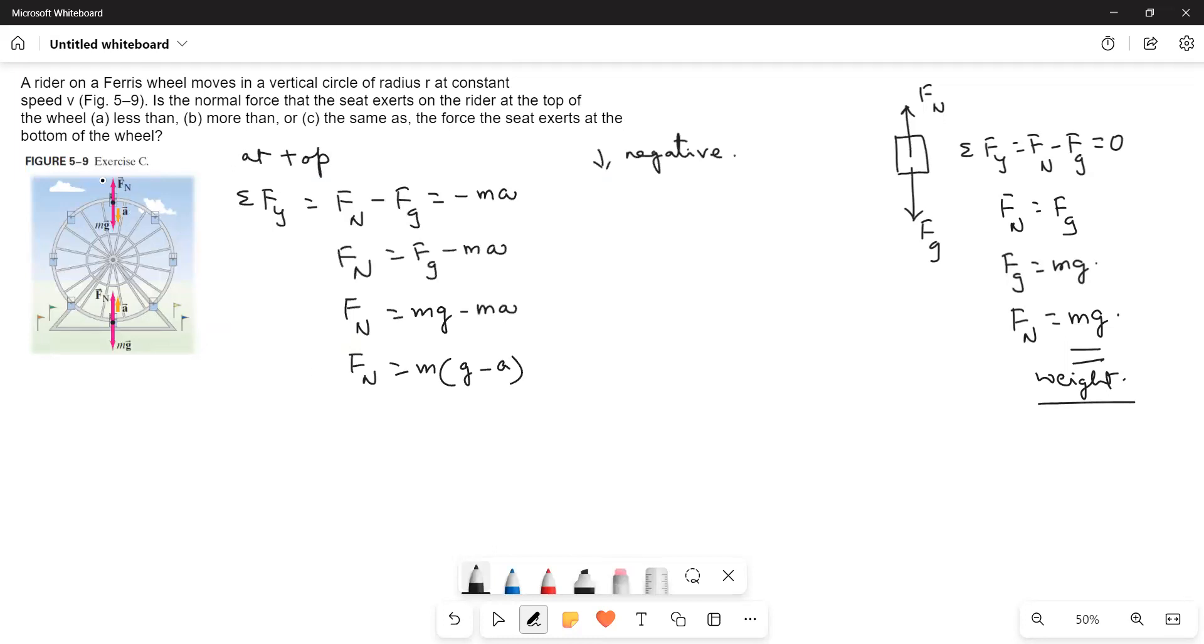Fn, the normal force acting on top, is less than his normal weight. This is the regular weight. Here, it is less than his regular weight.